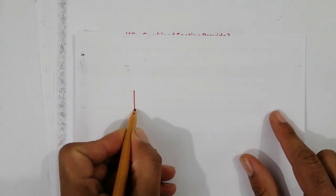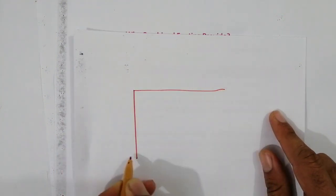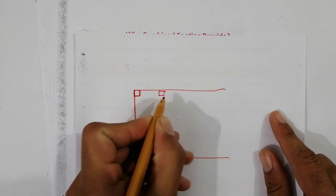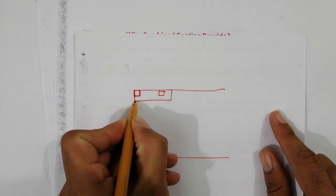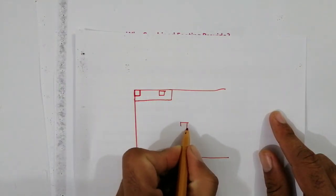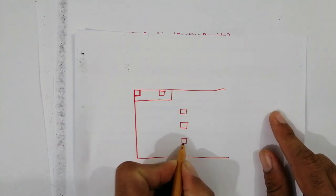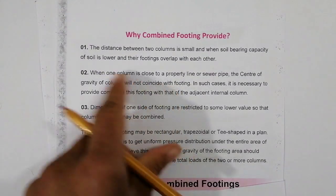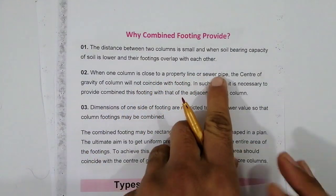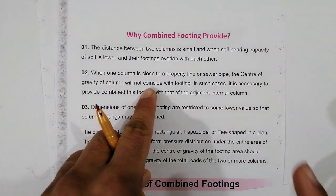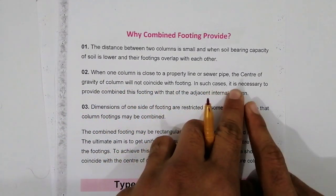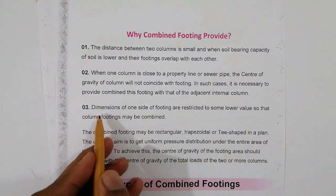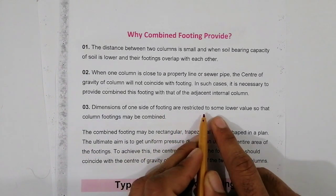For example, if this is the boundary wall or property line, and one column is right at the property line with a second column nearby, in this case we provide a combined footing for both columns. When the column is close to the property line or sewer pipe or any other obstacle, the center of gravity of the column will not coincide with the footing, so it is necessary to provide a combined footing with the adjacent internal column.